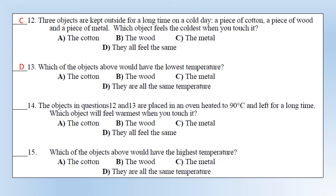Changing scenario: instead of outside in the cold, the three objects are placed in a 90-degree oven and again left for a long time. Which object feels the warmest when you touch it? The answer is metal - again about thermal conductivity, metal transfers energy to you at a faster rate so it feels hotter. And which object has the highest temperature? They're all the same again - left in the 90-degree oven for a long time, they're all at 90 degrees.